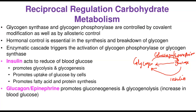Both glycogen synthase and glycogen phosphorylase are controlled by covalent modification — one of the ways to regulate enzyme activities — as well as allosteric control, where enzymes have different binding sites for effectors that can be activators or inhibitors. Hormonal control is essential to this mechanism, as hormonal signals trigger a series of enzymatic cascades involving activation through phosphorylation or dephosphorylation.